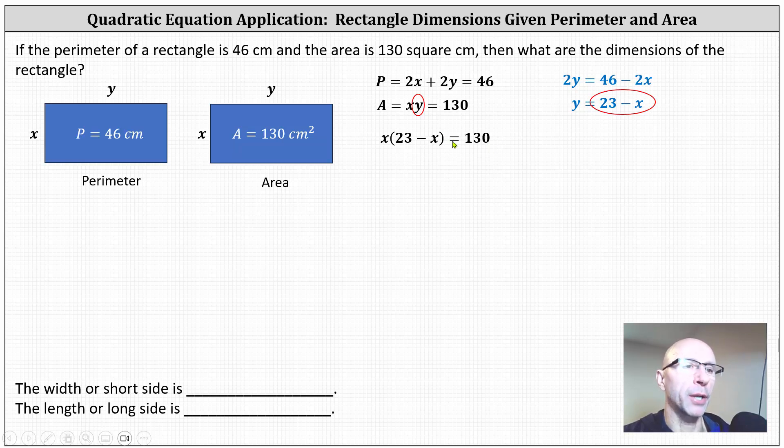Now we need to solve this equation. Let's first clear the parentheses on the left side by distributing x. This gives us 23x minus x squared equals 130.